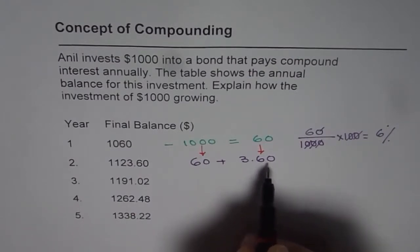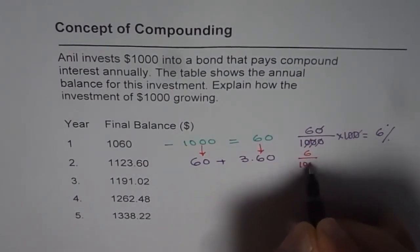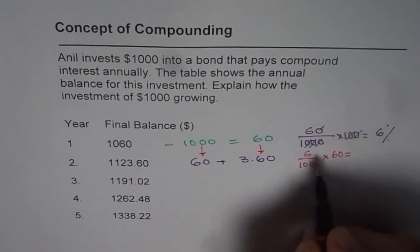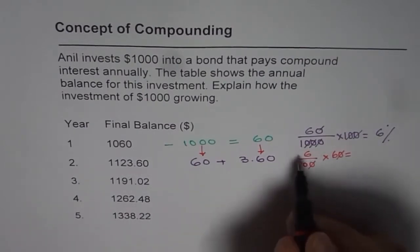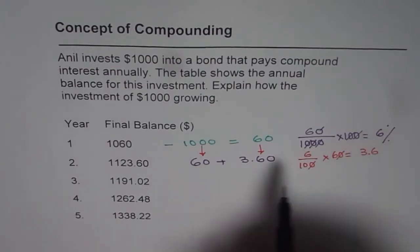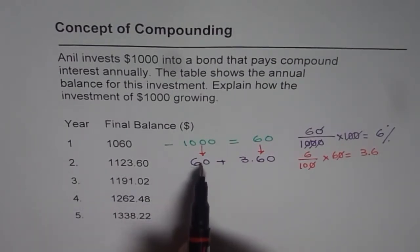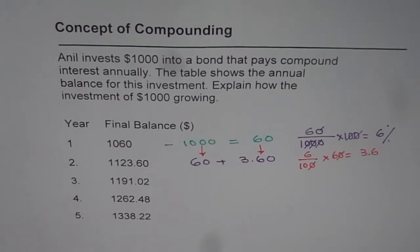That extra $3.60 is actually 6% of $60. Let's calculate: 6% of 60 is (6/100) × 60. We can cancel to get 6 × 6 = 36, divided by 10 gives 3.6. So I get 6% also on the interest earned. That is why at the end of the second year the growth is much more than the expected $60. That is compounding — when there is compound interest, the growth is on the growth, making it much faster.